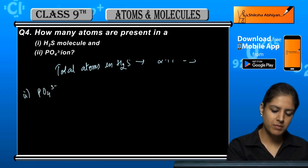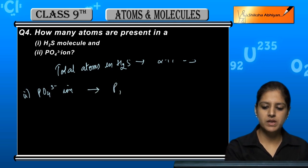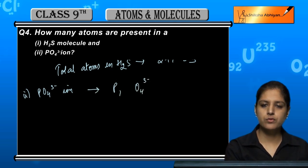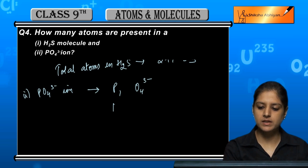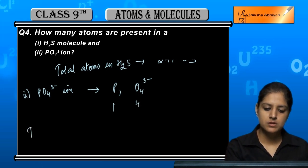Now for PO4 three minus ion, this is P and O4 three minus. P means 1 atom, O4 means 4 atoms.